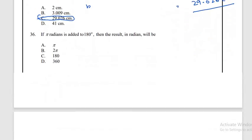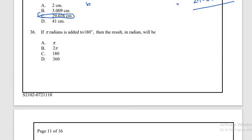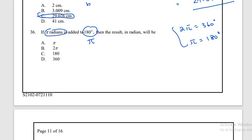Question number 36: if π radians is added to 180°, since 180° = π radians, adding π + π gives 2π radians. The correct answer is 2π radians.